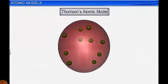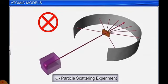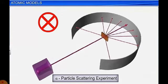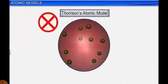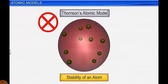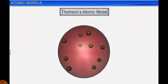In Thomson's model, electrons and protons are present, but this model could not explain the alpha scattering experiment. It could tell us about the arrangement of electron and proton but not the stability of an atom. It does not explain the observations obtained by the alpha scattering experiment, nor how positive and negative charges coexist without getting neutralized.